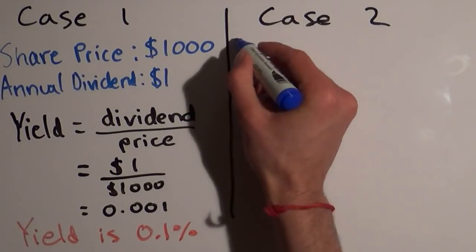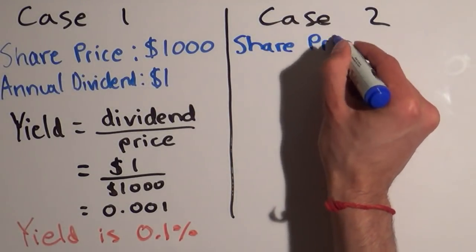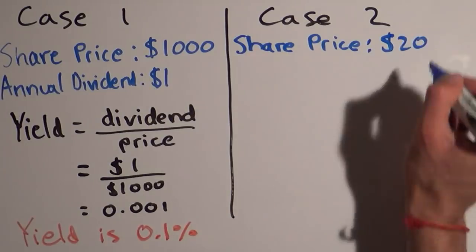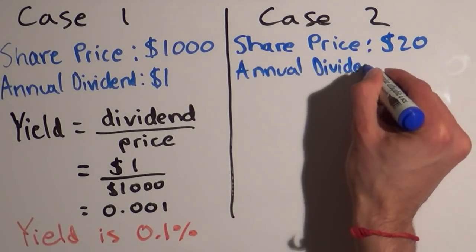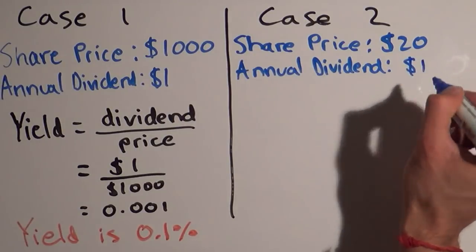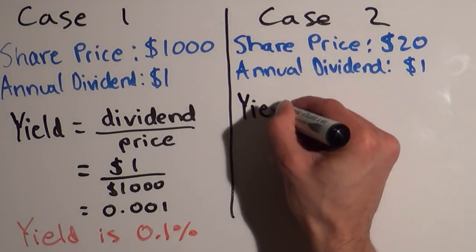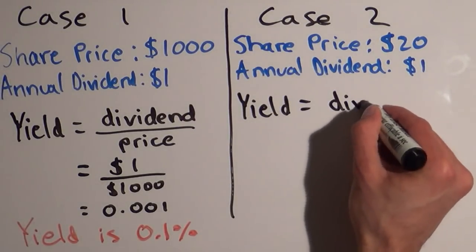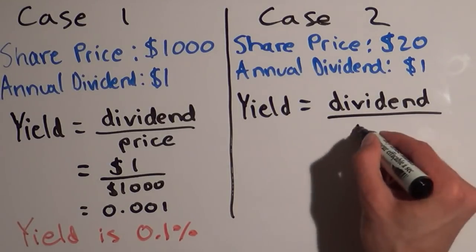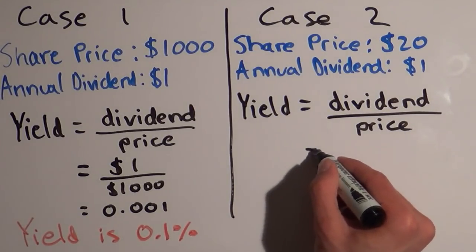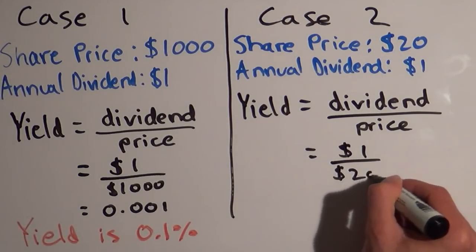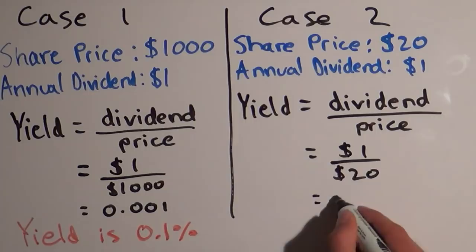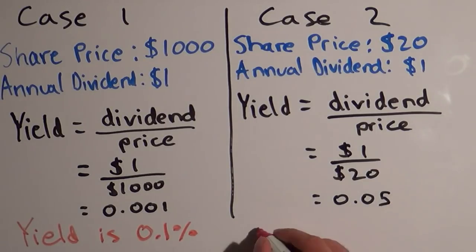Now let's move on to the next case. If one share of Sonishwarma costs twenty dollars and in one year it gives us one dollar, the annual dividend is one dollar. Just like before, to calculate the yield we take the dividend and divide it by the price. So the dividend of one dollar divided by the price of twenty dollars equals 0.05, which is another way of saying five percent.